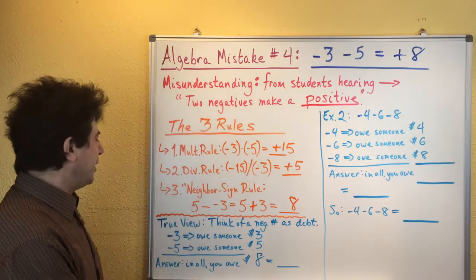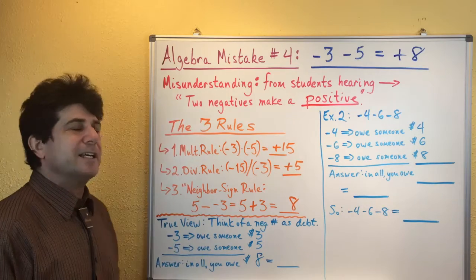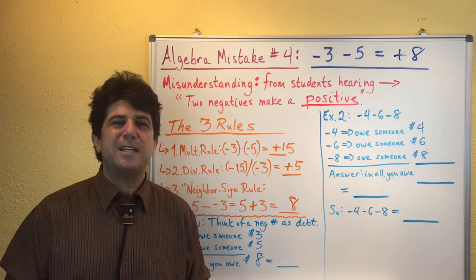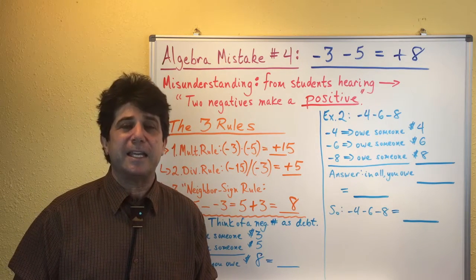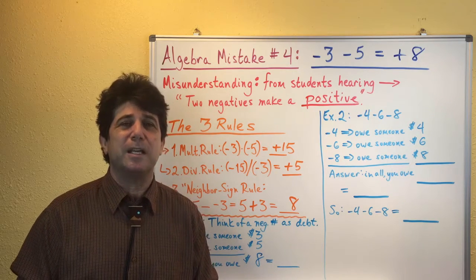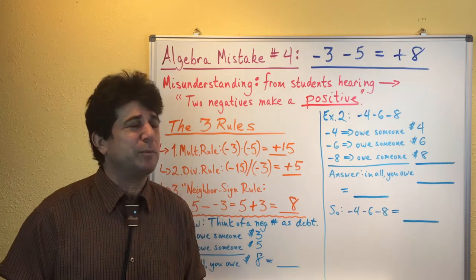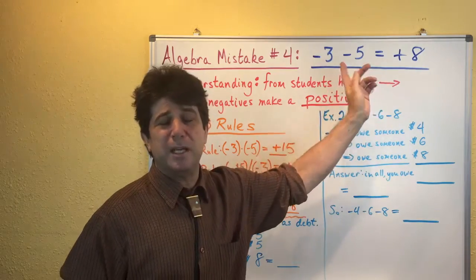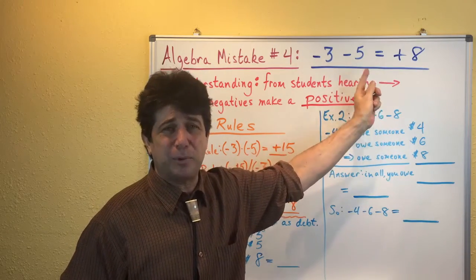And the better way to think about it, what I like to call the true view, is this. If we just think about a negative number as being like a debt, like some money that you owe somebody, this will all make sense and it will help us understand what to do in a problem like this and all problems like these.